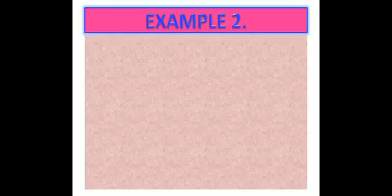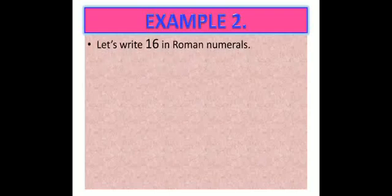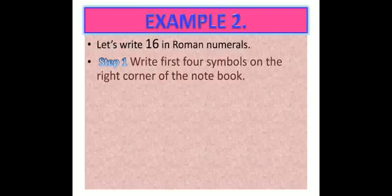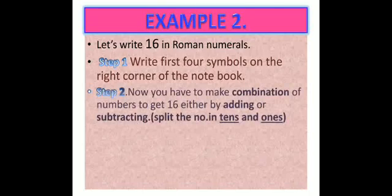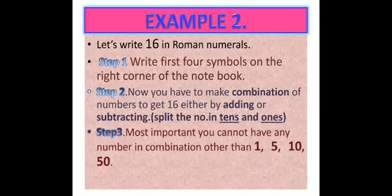Let's take another example. Let us write 16 in Roman numerals. Again, my first step is to write all 4 symbols on the right corner of your notebook. Now you have to make a combination of numbers to get 16, either by adding or subtracting. Very importantly, you have to split the number into tens and ones — that will make it easier. You cannot have any number in combination other than 1, 5, 10, and 50. Recollect all the rules.